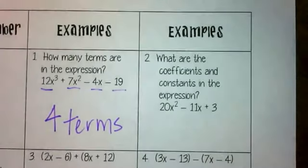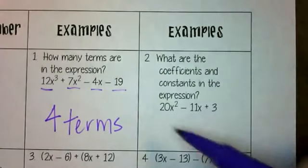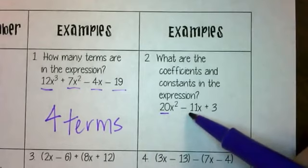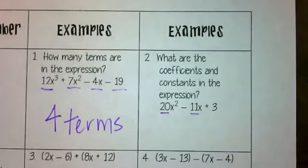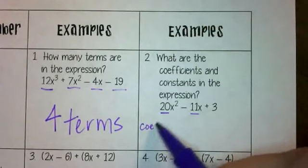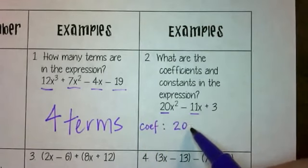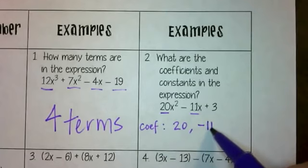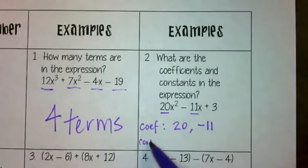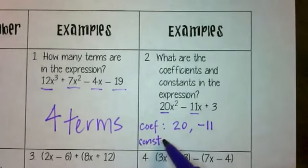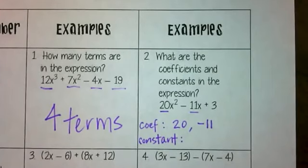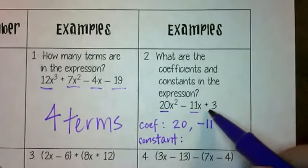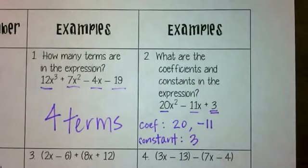Number two: what are the coefficients and constants? Coefficients are the number in front of the variable — it's multiplied to the variable, and it comes in handy when we combine like terms. The coefficients for this problem are 20 and negative 11. Constants are the terms in your polynomial that don't have a variable — that's why it's constant, because it's not going to vary. In this problem, our constant is a positive three.